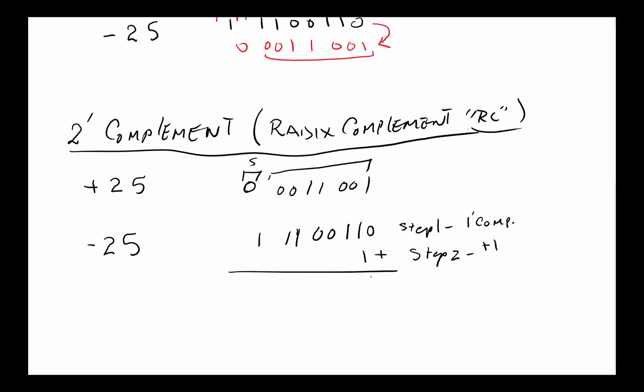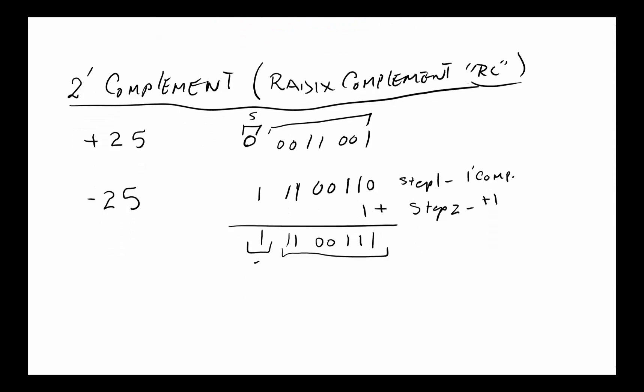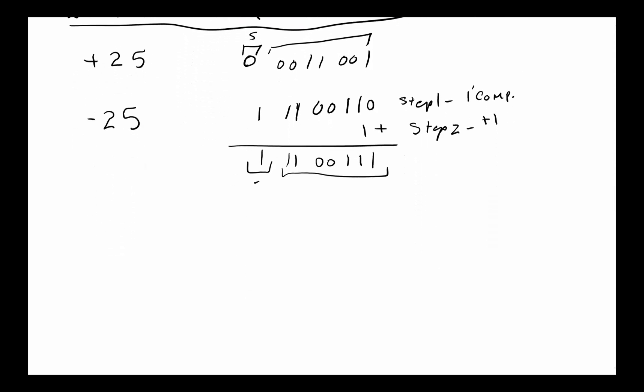There's a second step to get to two's complement - you add 1. So we simply add 1 to this. 1 plus 0 is 1, so I get 11100111. This represents a negative number, and this represents the equivalent of the magnitude, but remember that is in two's complement.